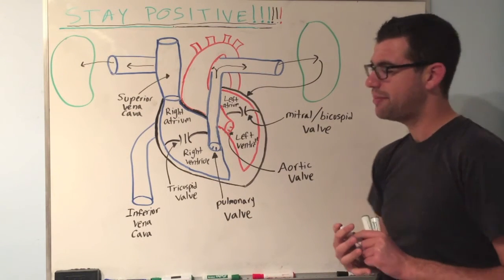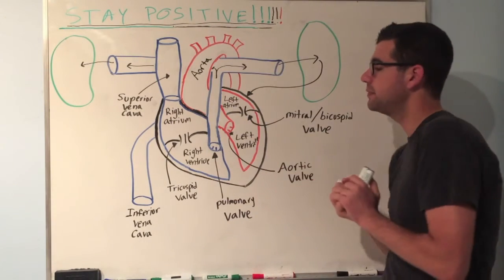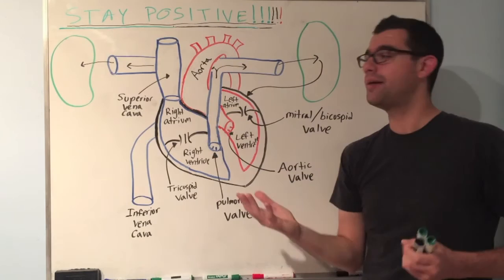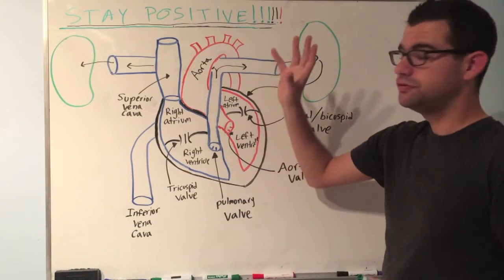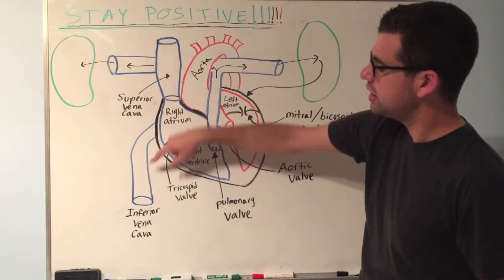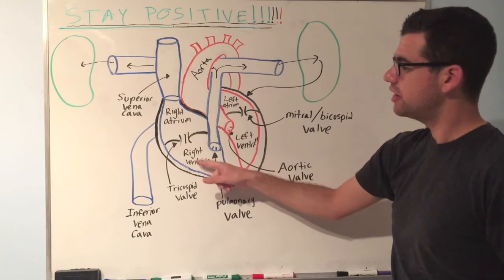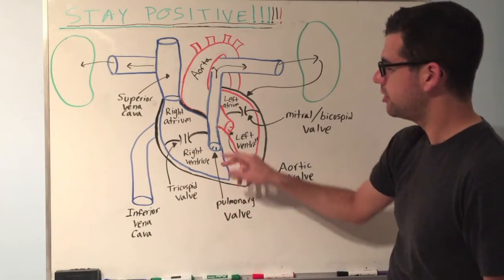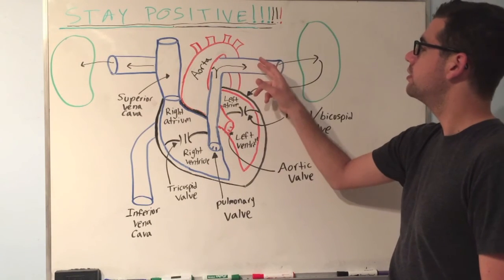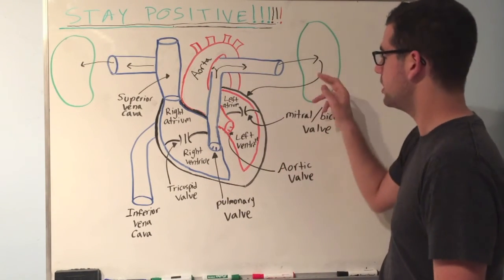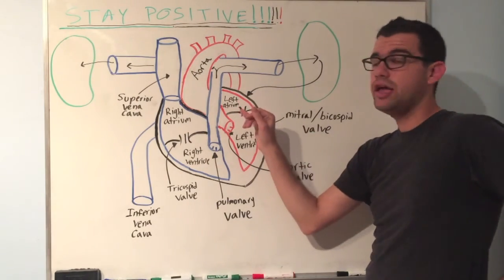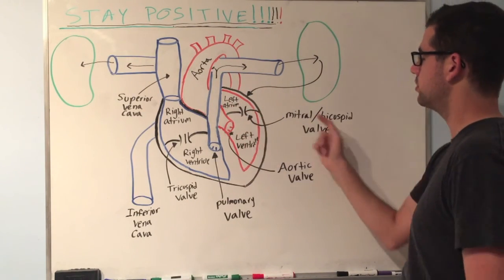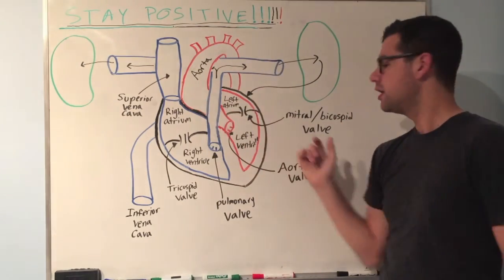The aorta is that powerful — the heart is that powerful. So that's blood flow through the heart. Quick review: deoxygenated blood through the inferior and superior vena cava drains into the right atrium. Right atrium to right ventricle through the tricuspid valve. Right ventricle through the pulmonary valve into the pulmonary trunk, then to the lungs through the pulmonary arteries. Once oxygenated, blood returns to the left atrium via the pulmonary veins. Left atrium to left ventricle through the mitral or bicuspid valve. And finally, left ventricle to the aorta through the aortic valve.